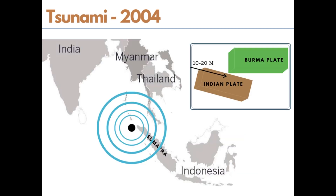Tsunami waves hit the Indian Ocean on December 24, 2004, creating large-scale devastation. The tsunami was a result of an earthquake with its epicenter on Sumatra Island, west of Indonesia, at a magnitude of 9.0 on the Richter scale — very severe. During this event, the Indian Plate went below the Burma Plate, causing a sudden movement in the sea floor. The ocean floor was displaced by about 10 to 20 meters and tilted in a downward direction.